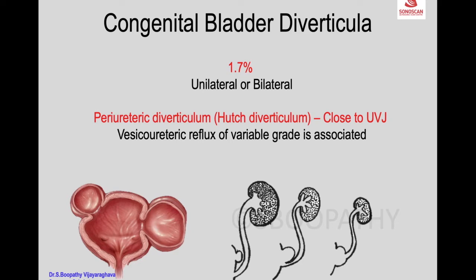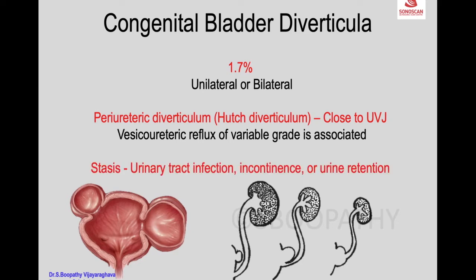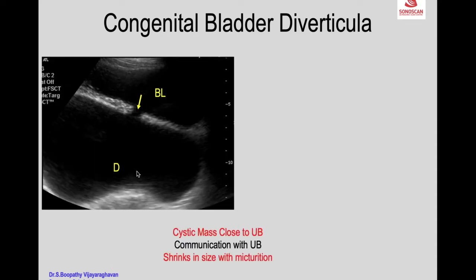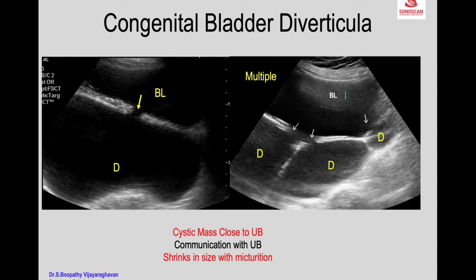Reflux of various grades is associated. The diverticulum problem is stasis — stasis of urine which results in urinary tract infection and incontinence. This diverticulum decreases in volume after micturition. The diverticulum can be multiple, and as seen here, the bladder shows multiple cystic masses each communicating with the urinary bladder.